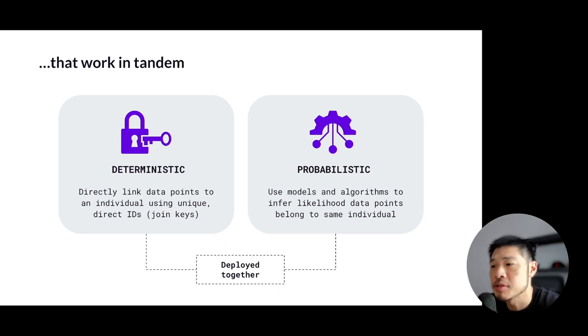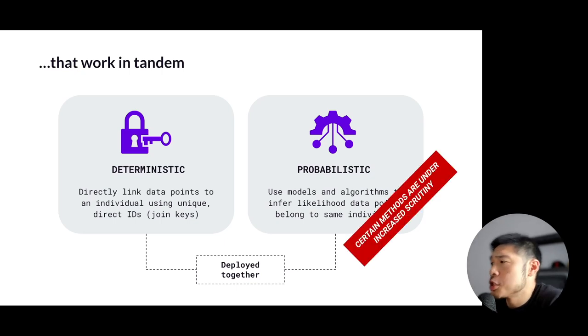Now it should be mentioned that certain probabilistic matching methods, most notably device fingerprinting, have and are under greater scrutiny given the evolution and greater importance placed on user data privacy. The lines between what's acceptable and what's shady when it comes to probabilistic methodologies is a bit of a gray area in the industry, and the goal post will shift sometimes depending on the incentives and who you ask. So it's definitely something to keep in mind.